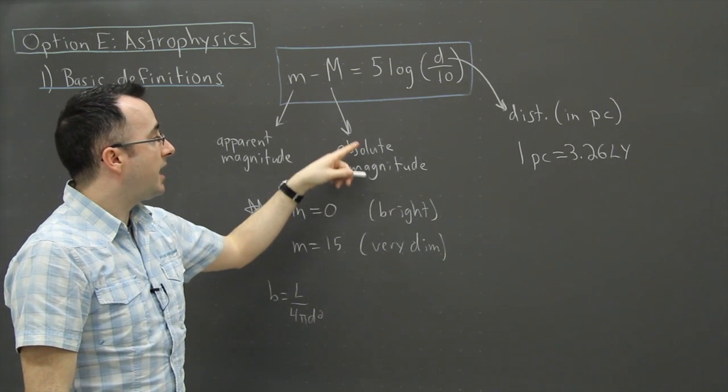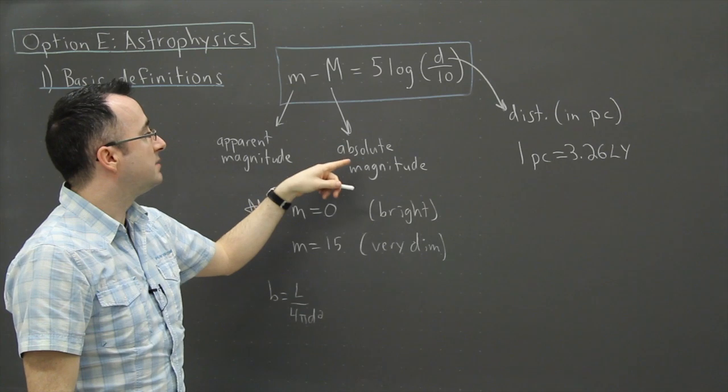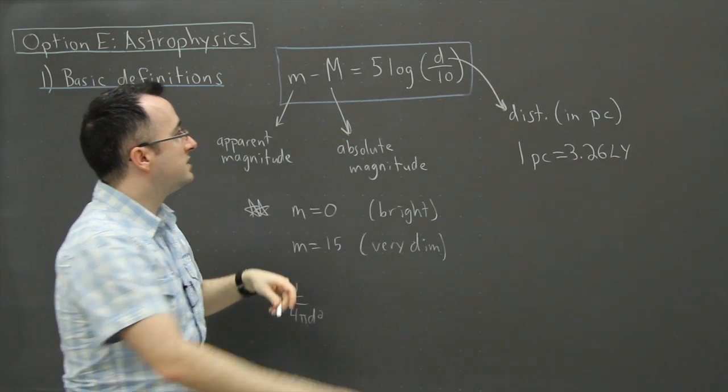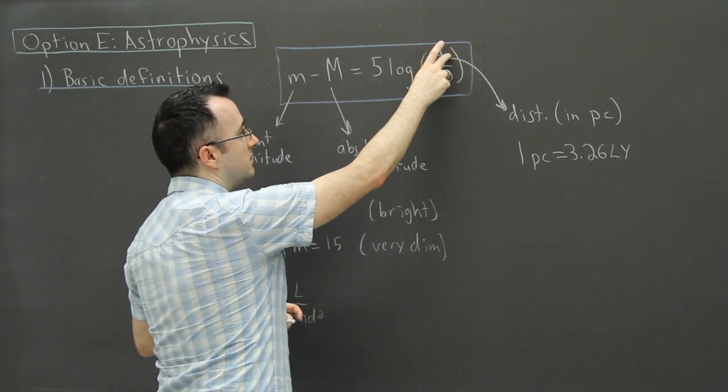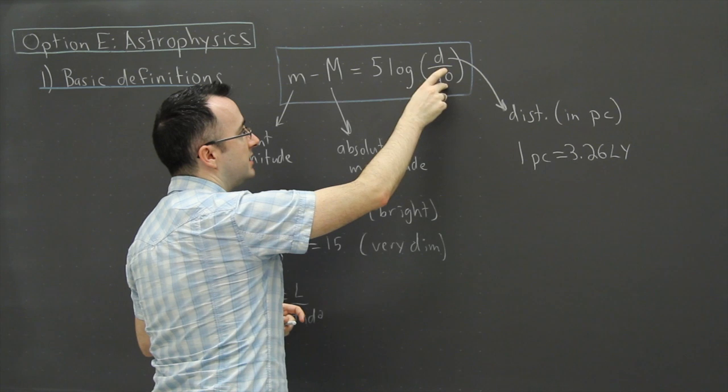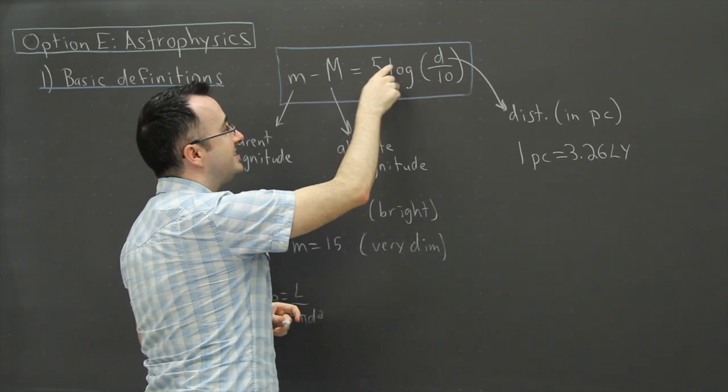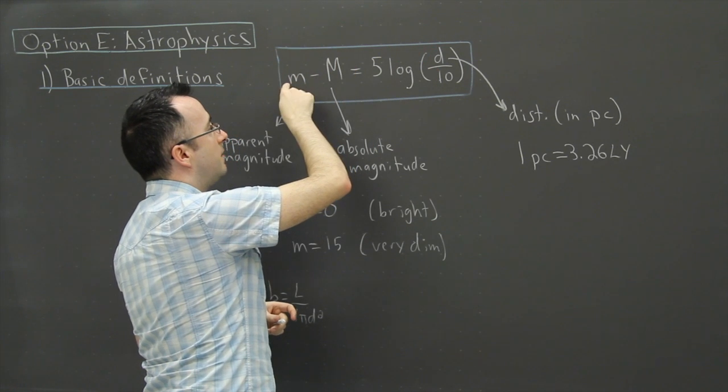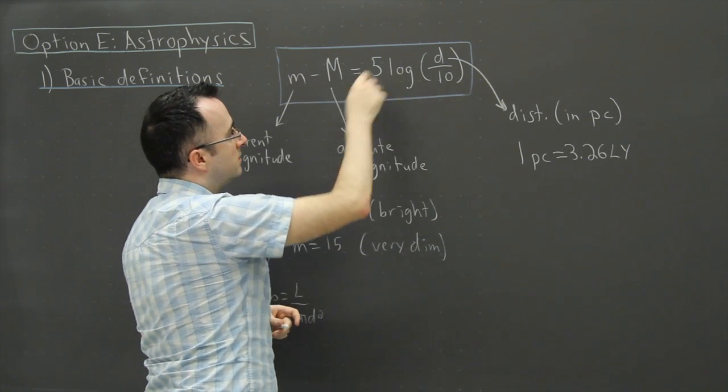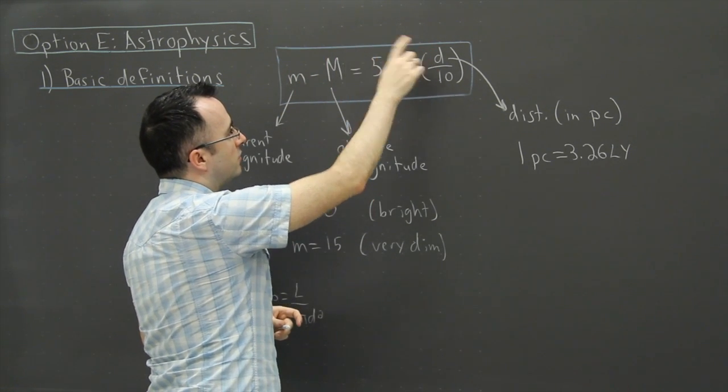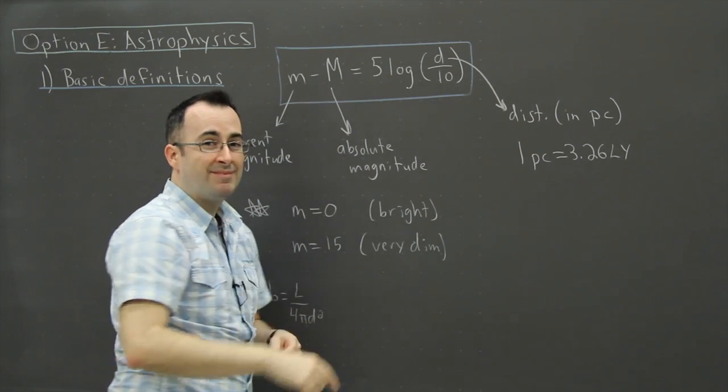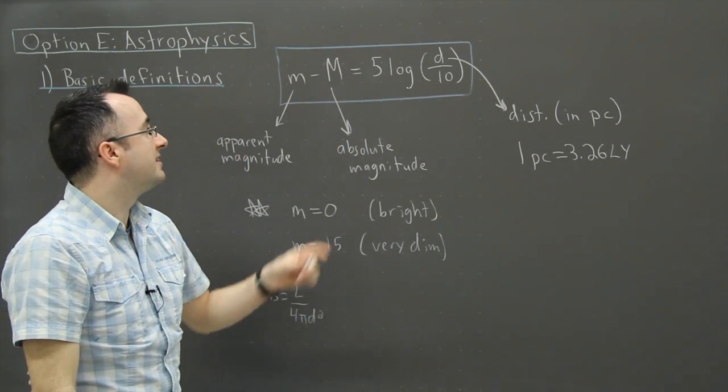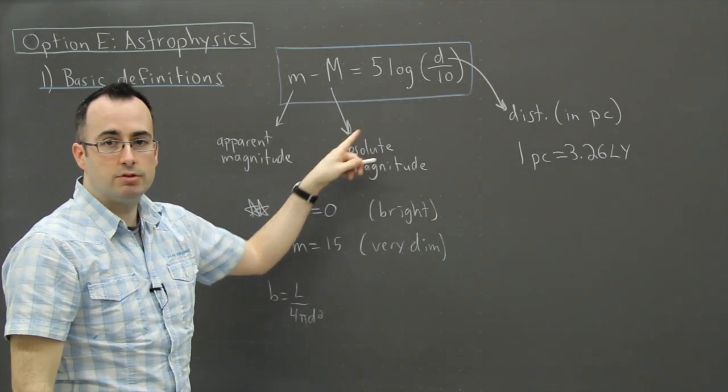Now you can see that absolute magnitude is like this because what you can do is if you set d here equal to 10, 10 over 10 gives you 1, log of 1 is 0. So then 5 times 0 cancels out. That means m minus M equals 0. Then you can take this m and move it over and then you have m equals M. That's kind of how you can take a look and see that what absolute magnitude is.